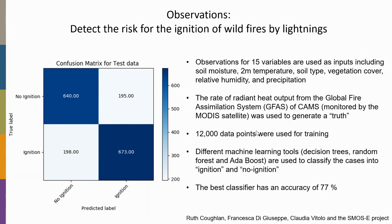One application area is wildfire risk detection: you take satellite observations and model data, identify where wildfires have occurred in the past using satellite products, and then train a machine learning model to predict wildfire probability. This is a post-processing tool based on observations and is a classical application for decision trees.